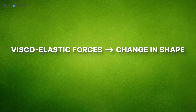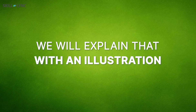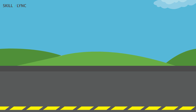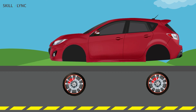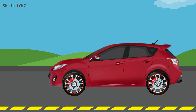The primary cause behind the rolling resistance of air-filled tires is the viscoelastic forces that occur due to change in shape. We'll explain that with an illustration. Let's assume you have a solitary wheel of a car placed on the road. The tire alone is not very heavy, so there are no deformations on it. Now, the weight of a car is placed on the tire.